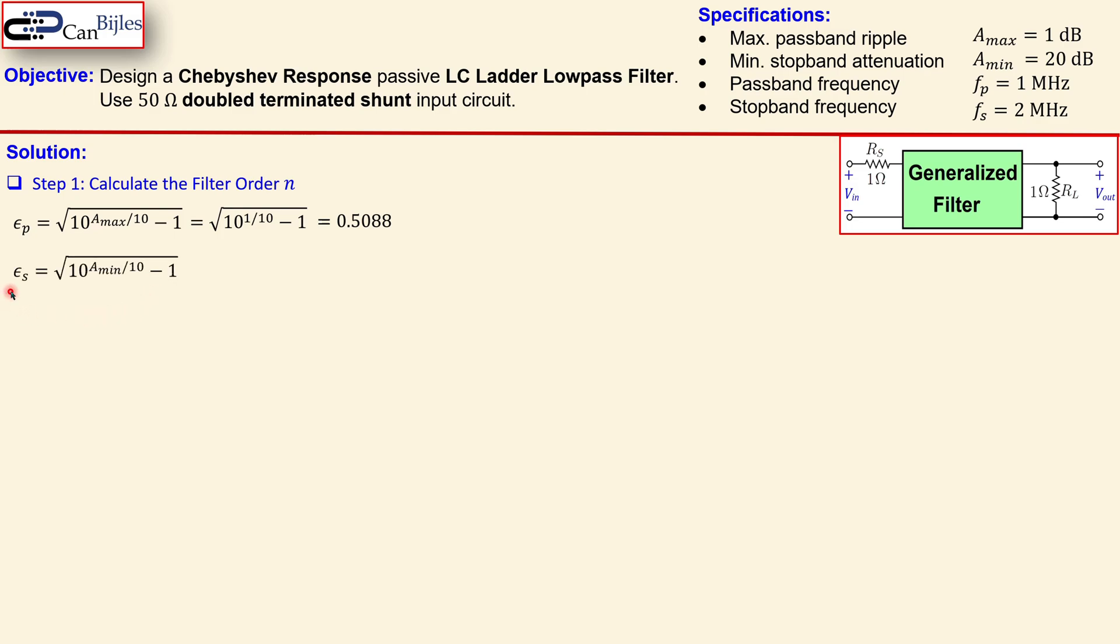Now going to the epsilon s which is related to A_min the attenuation. So you get then A_min that is then in this case 20 and you will calculate now 9.9499.